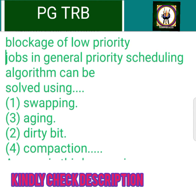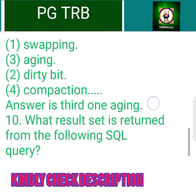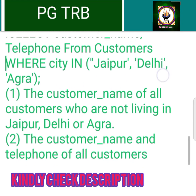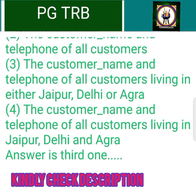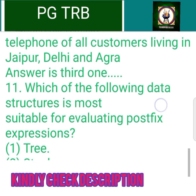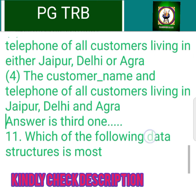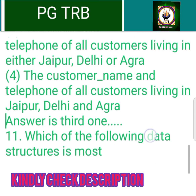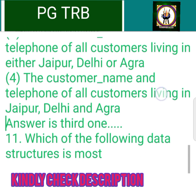What result set is returned from the following SQL query: SELECT customer_name, telephone FROM customers WHERE city IN ('Jaipur', 'Delhi', 'Agra')? 1. customer_name of all customers not living in Jaipur, Delhi, Agra, 2. customer_name and telephone of all customers, 3. customer_name and telephone of all customers living in either Jaipur, Delhi, or Agra, 4. customer_name and telephone of customers living in Jaipur, Delhi, and Agra. Answer is 3rd.